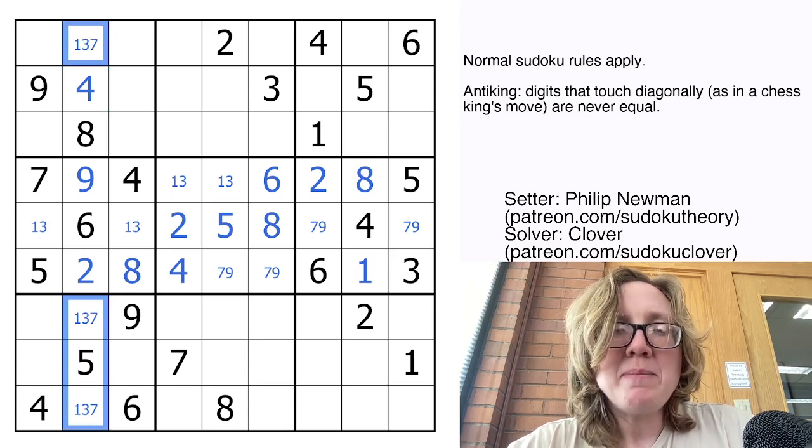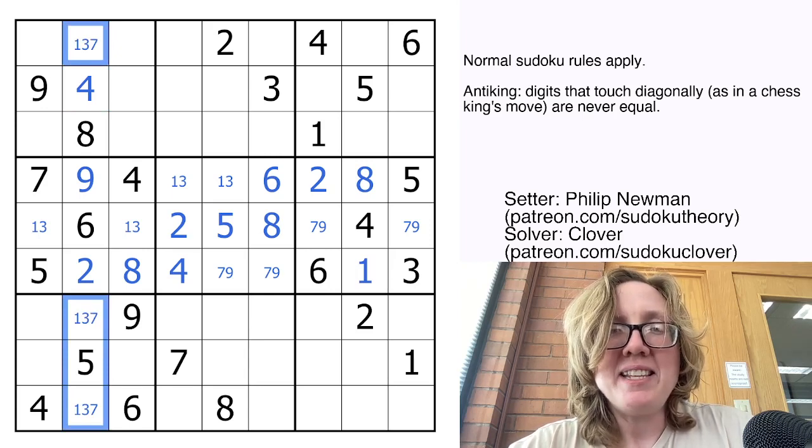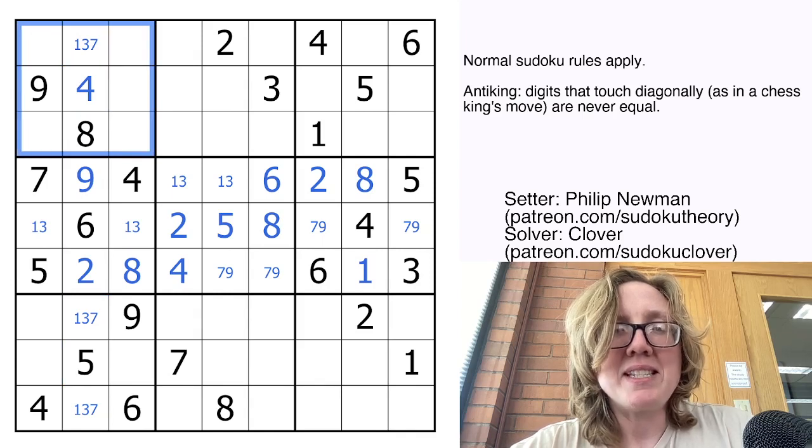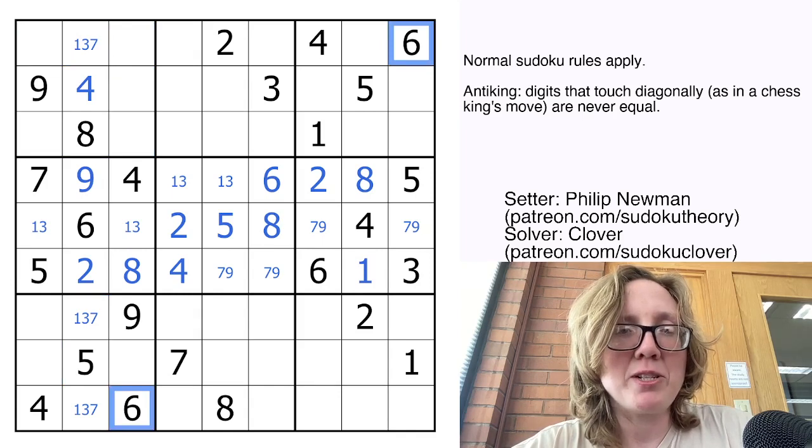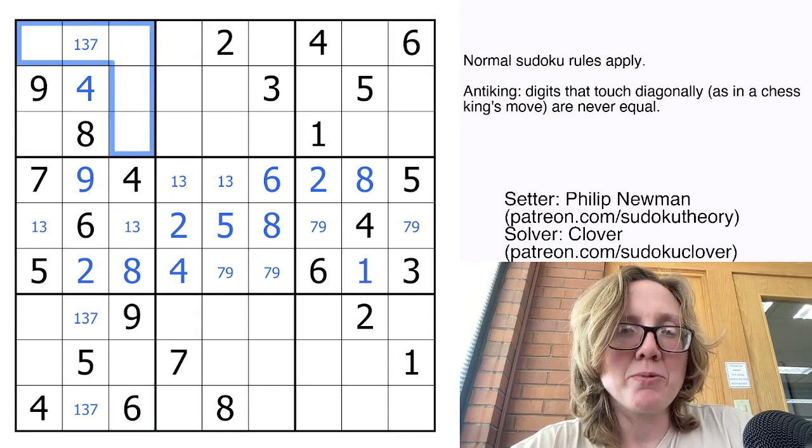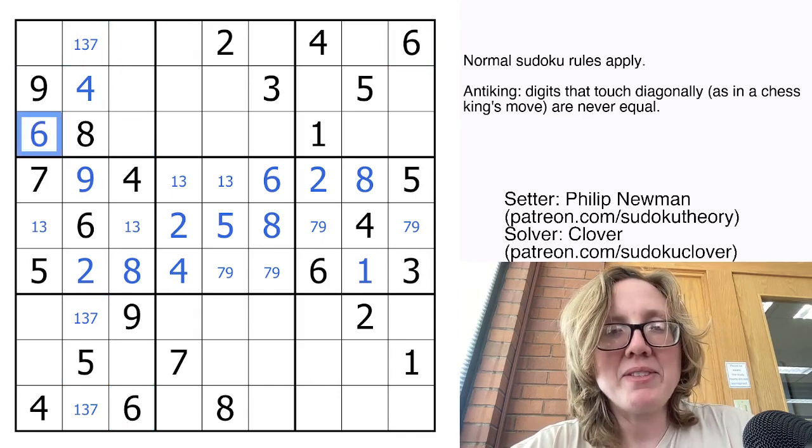That didn't give me as much as I would have hoped, but I'm looking at this region now, and something else stands out to me. It's actually not a naked digit, it's going to be a hidden digit. I have two 6s looking at this region, which work together to rule 6 out of all of these cells, and now I have a 6 here.